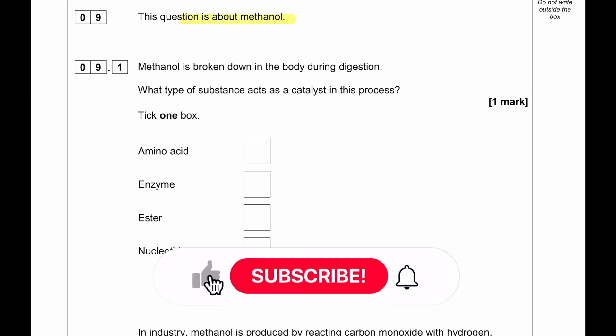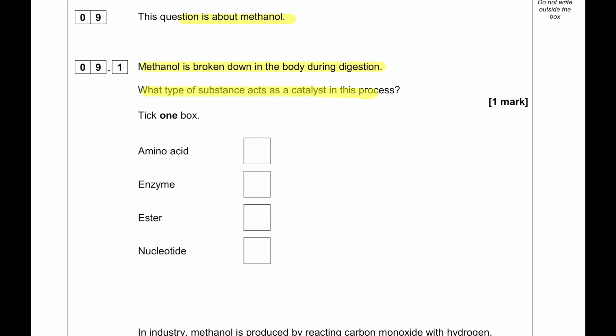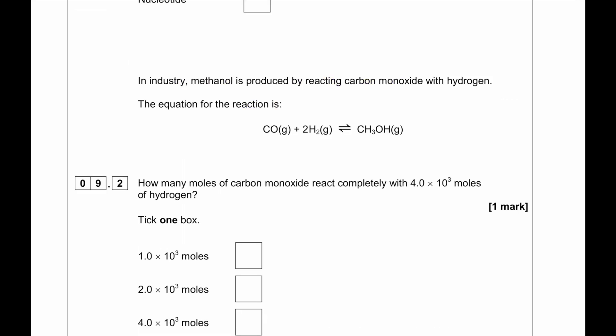This question is about methanol. Methanol is broken down in the body during digestion. What type of substances act as a catalyst in this process? Because it is in a human body, so obviously it will be enzyme. In industry, methanol is produced by reacting carbon monoxide with hydrogen. The equation for the reaction is given below. We can see that there is a reaction of 1 to 2 to 1 mole ratio. How many moles of carbon monoxide reacts completely with 4.0 times 10 to the power of 3 moles of hydrogen. This is a very good question because we have a 2 to 1 ratio. Two molecules of hydrogen reacts with one molecule of carbon monoxide. So whatever the molecules of hydrogen we have, we will just divide by 2. So it will be 2.0 into 10 to the power of 3 moles.